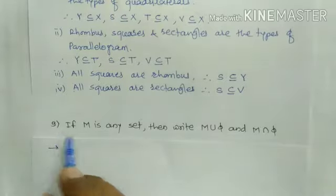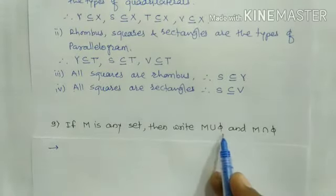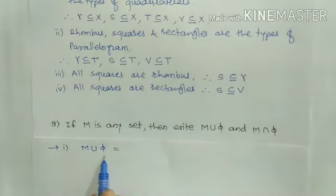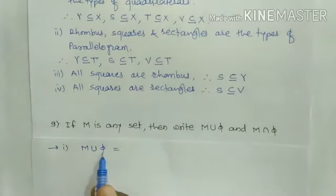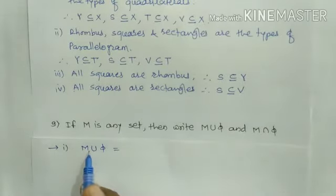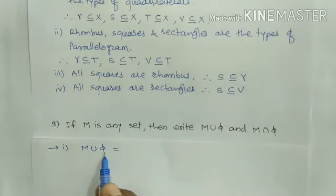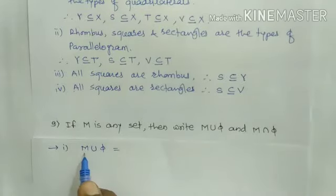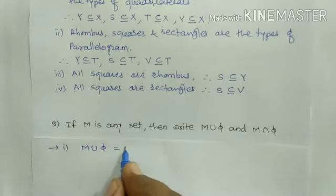Now the next question is question number nine. If M is any set, then write M union phi and M intersection phi. First we write M union phi. Here phi is an empty set or null set — it means it has not a single element. M union phi means the set of elements which are in M or phi. Since phi has no elements, the union of these two sets contains only the elements in set M. Therefore M union phi equals M.